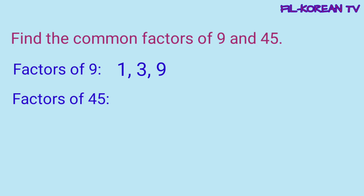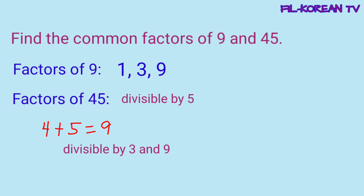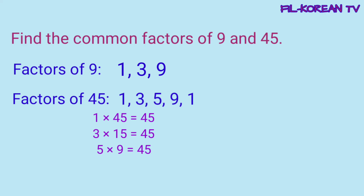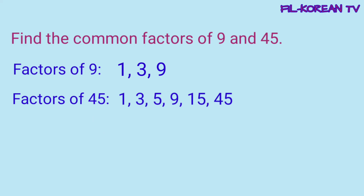Ngayon naman, kunin natin yung factors ng 45. Ang 45, nagtatapos sa 5. So, divisible by 5. Ngayon, i-plus natin yung lahat ng digits: 4 plus 5 equals 9. Ang 9 ay divisible ng 3 at divisible ng 9. So, may factors siya na 5, 3, at 9. Ngayon, para makuha natin yung iba pang factors ng 45, isipin natin yung numbers na kapag i-times natin sa 3, 5, at 9 ay magiging 45. Ito yung mga factors ng 45. Isulat na natin lahat ng factors ng 45. Ngayon naman, kunin natin yung common factors ng 9 at 45. Ang common factors nila ay 1, 3, at 9.